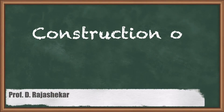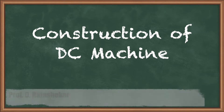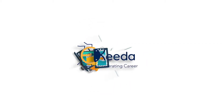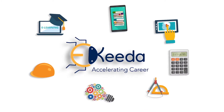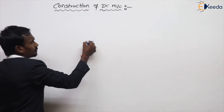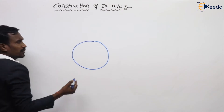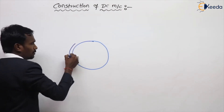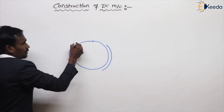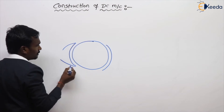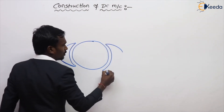Hi friends, in this video we are going to discuss about the construction of a DC machine. For example, this is my DC machine armature. We have poles — these are the poles of my DC machine. I am taking a two-pole machine.